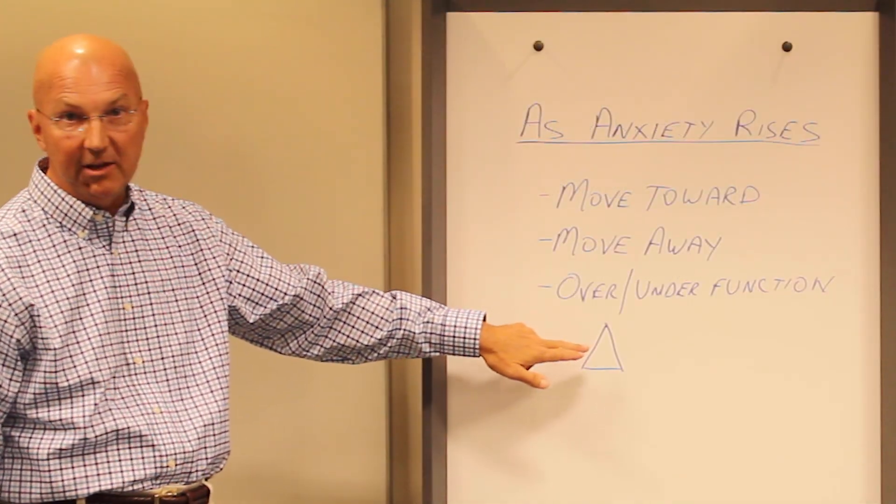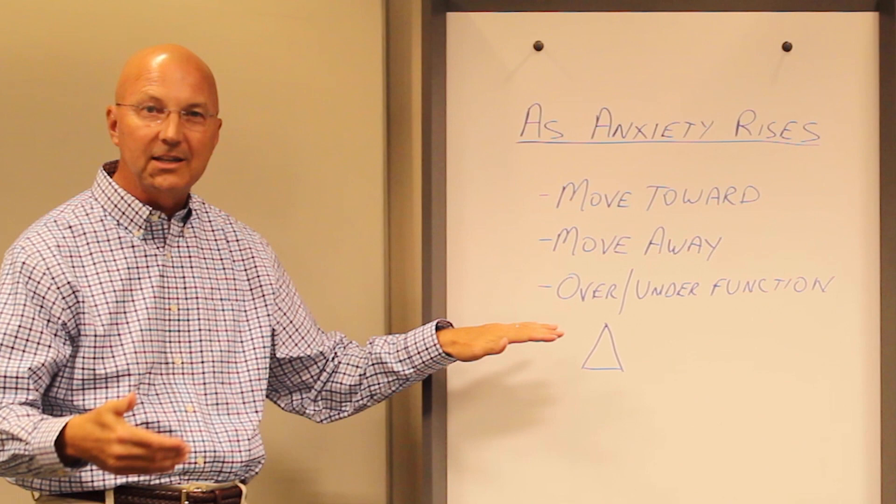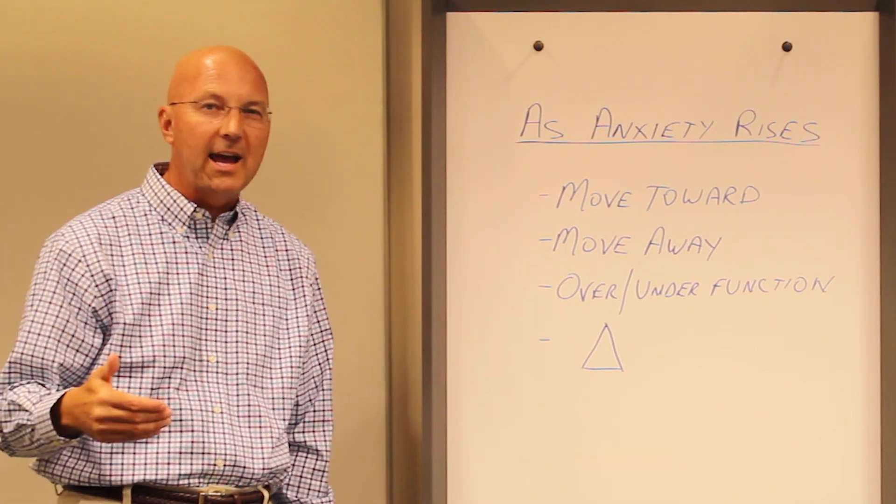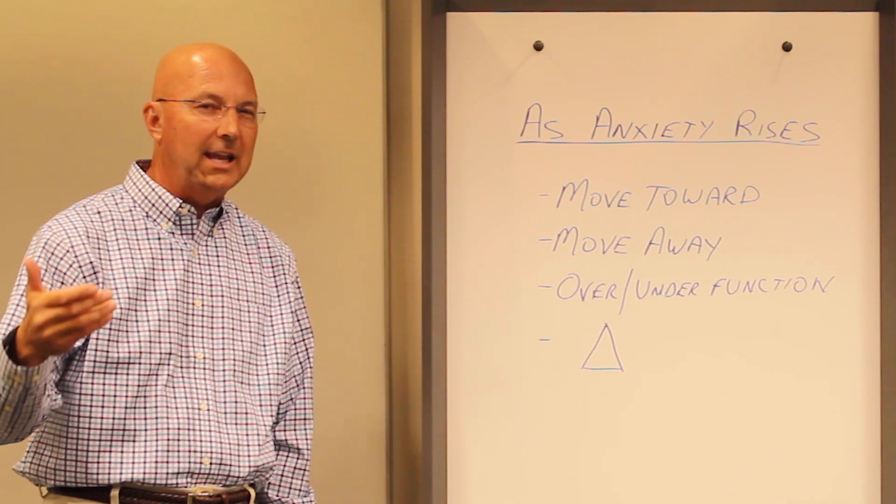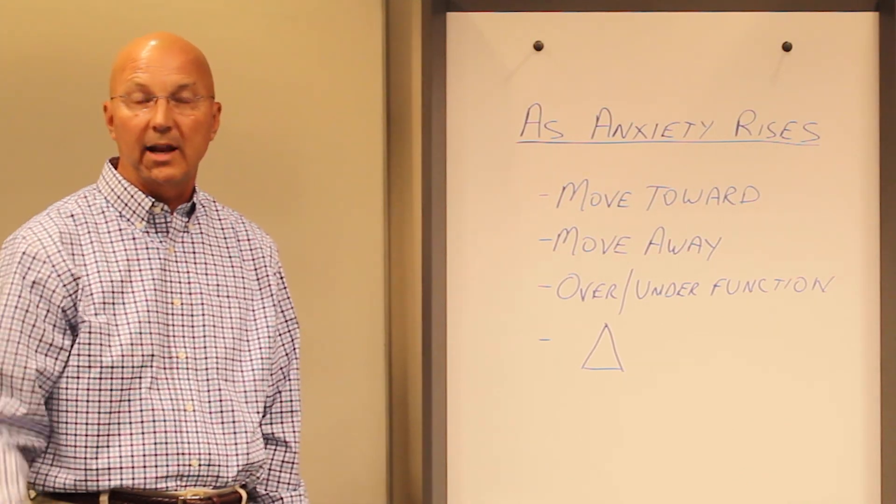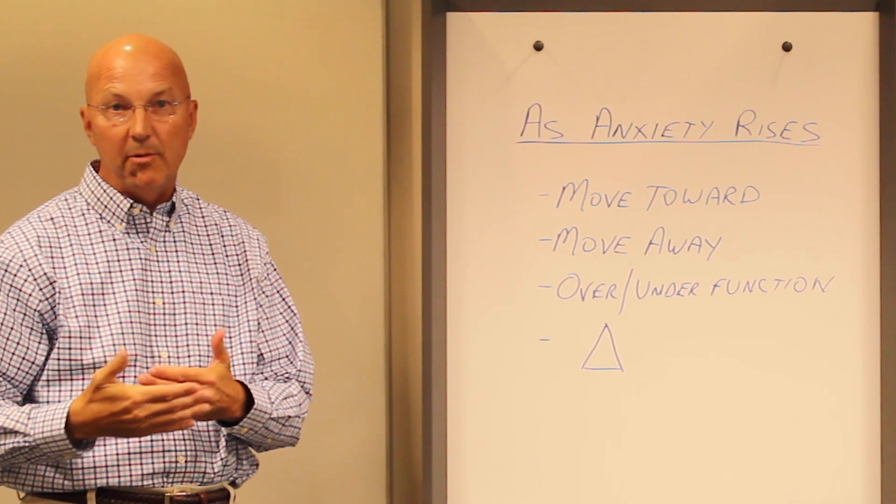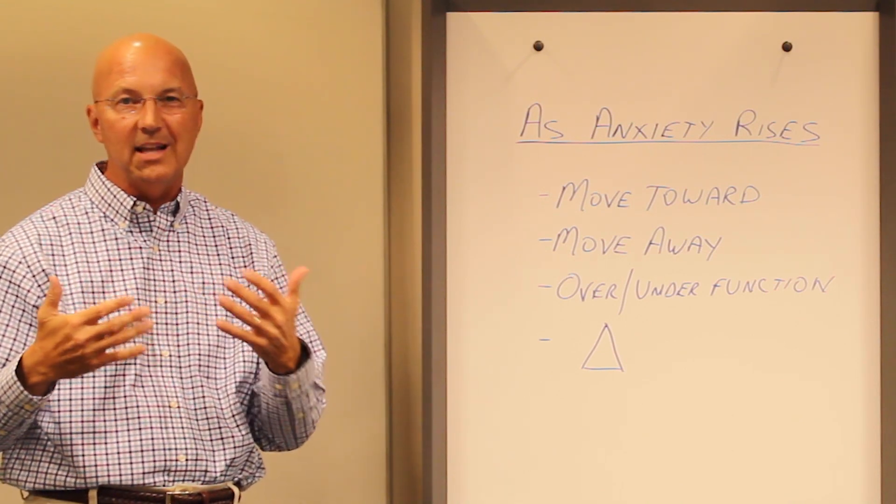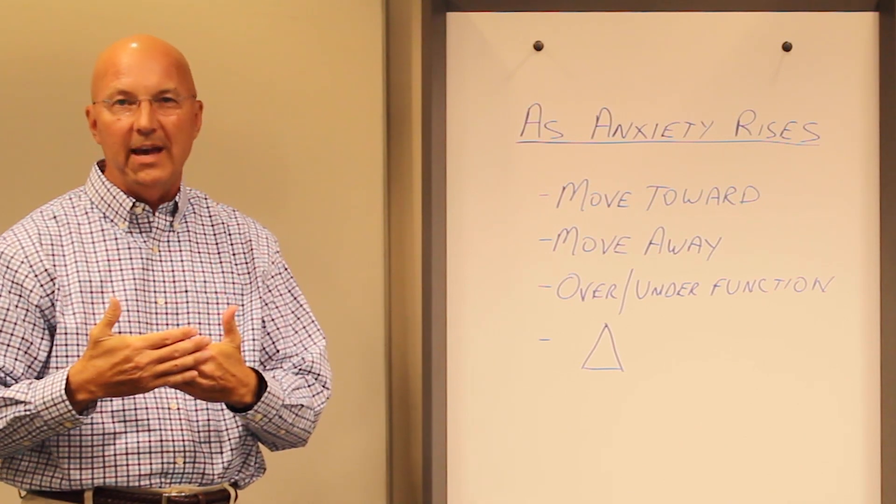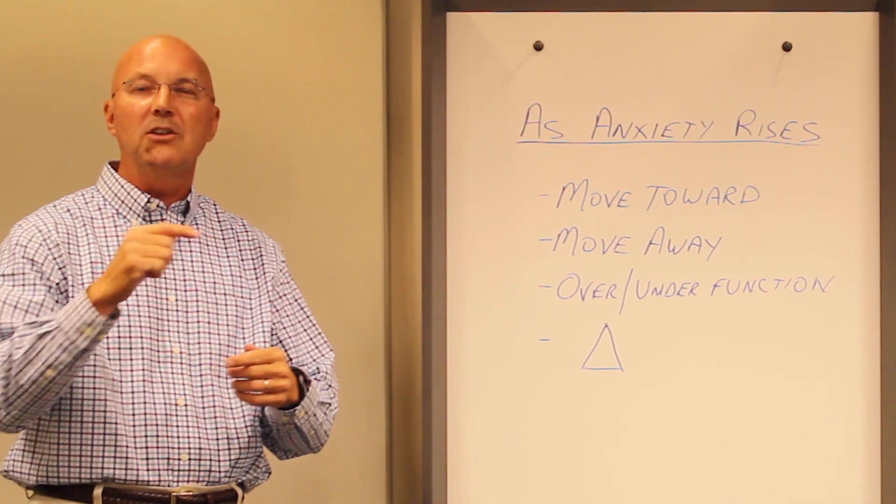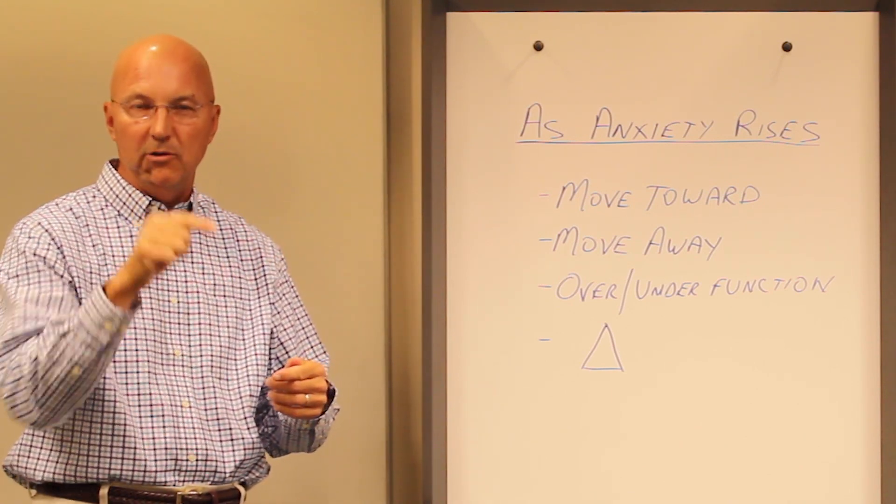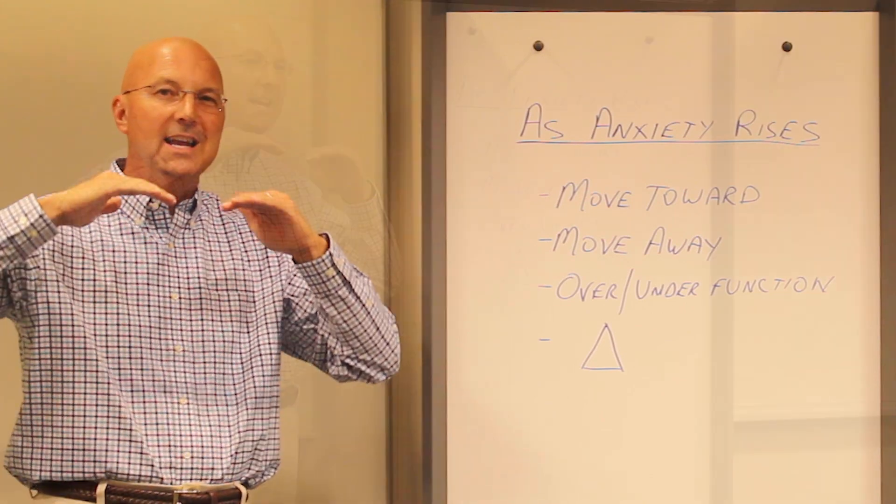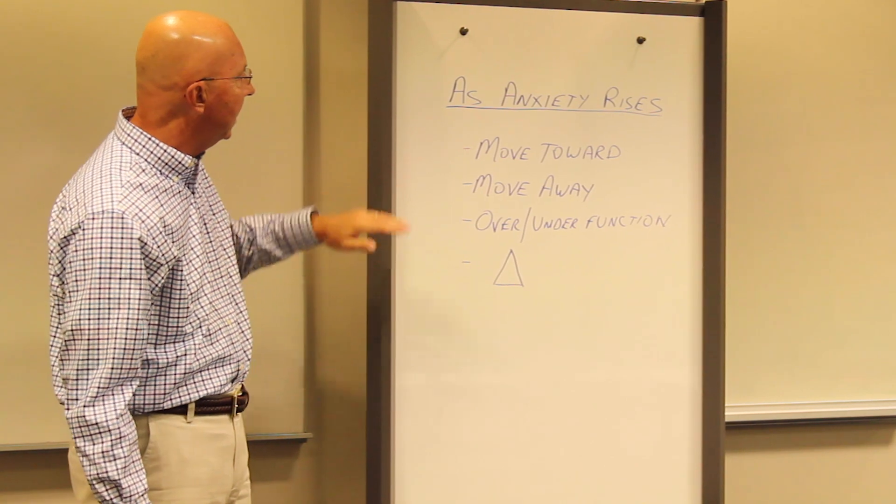And the last thing we can do, kind of a predictive behavior on our part, is to triangle. You and I are in a conversation, and I don't like what you're saying. And instead of dealing with you directly, which is what the Bible calls us to do, what Jesus asks us to do if we're in a relationship that's not right, that we deal with that person directly. Instead of doing that, I talk to someone else about you. I start to complain about you and get that person on my side as a way to reduce my anxiety.